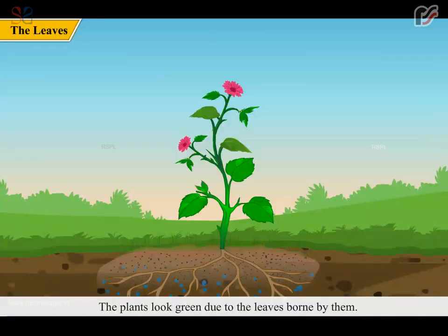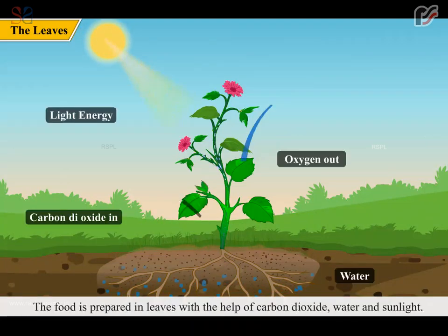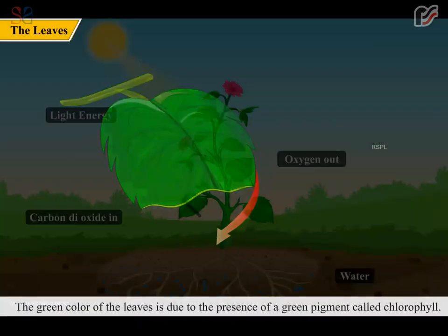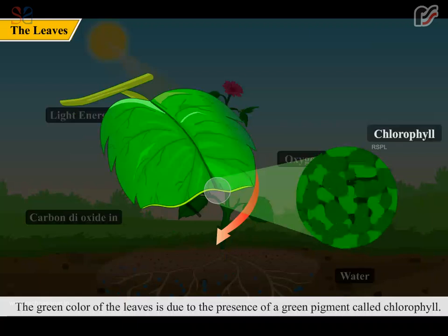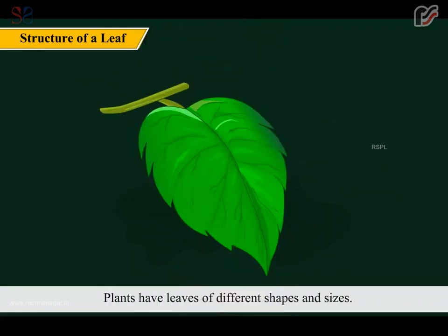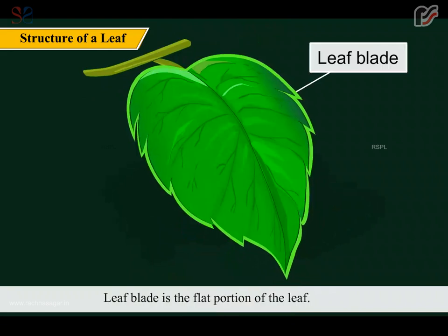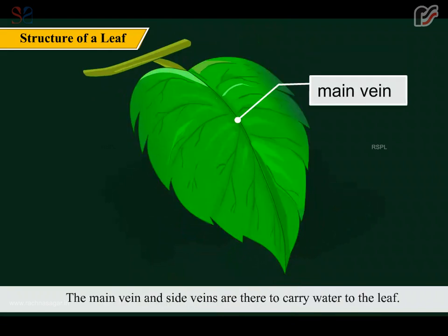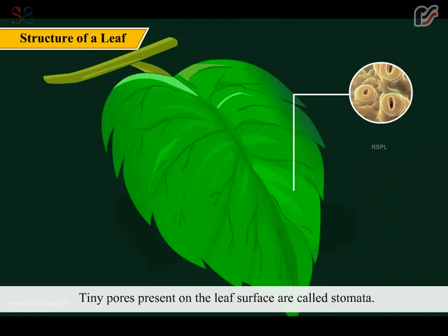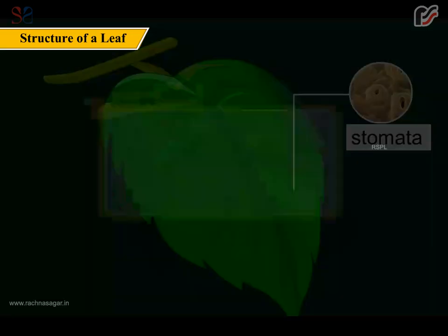The plants look green due to the leaves borne by them. They are the food factories of plants. The food is prepared in leaves with the help of carbon dioxide, water and sunlight. This process is called photosynthesis. The green color of the leaves is due to the presence of a green pigment called chlorophyll. Plants have leaves of different shapes and sizes. The leaf blade is the flat portion of the leaf. The main vein and side veins carry water to the leaf.